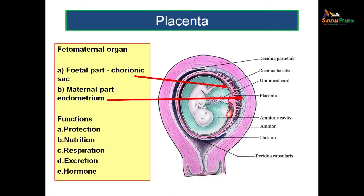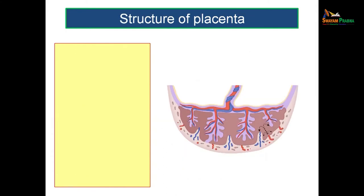The functions of the placenta are: it is essential for the protection of the fetus, it acts as a source of nutrition, it helps in respiration, it helps in excretion of waste products, and it also secretes some important hormones.